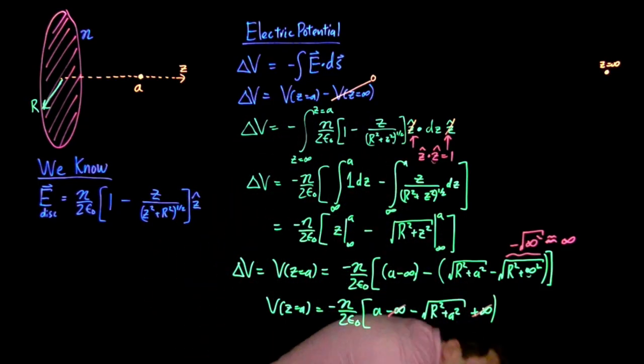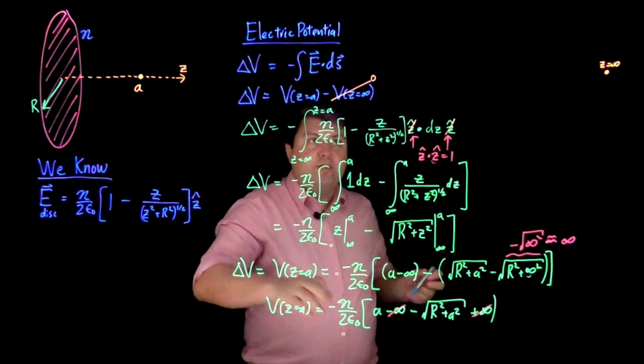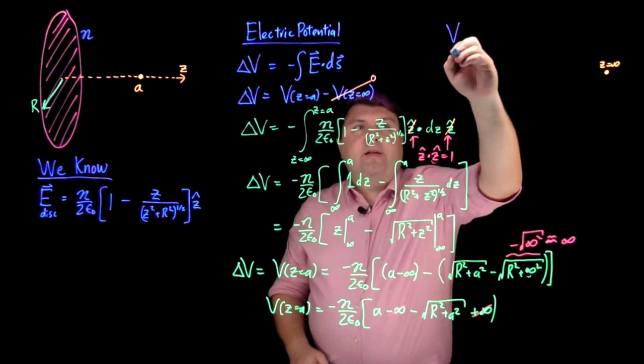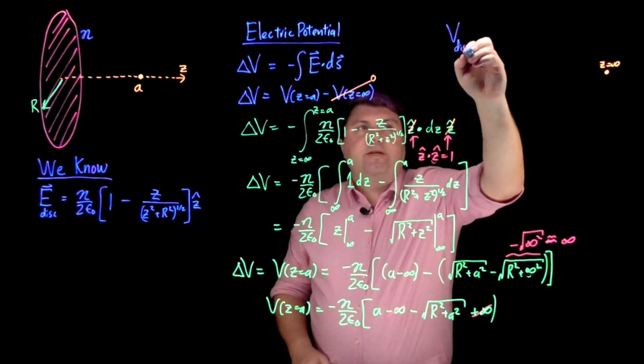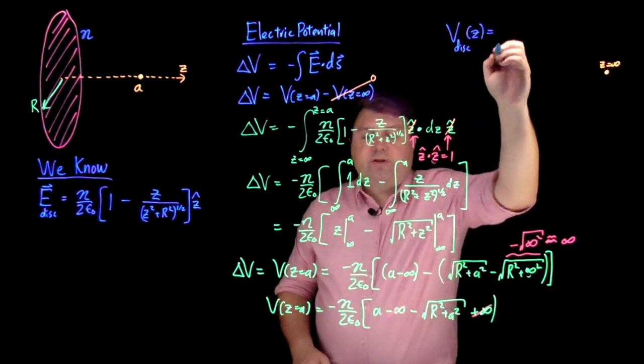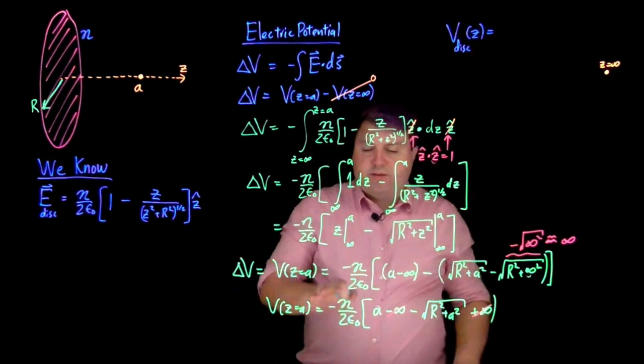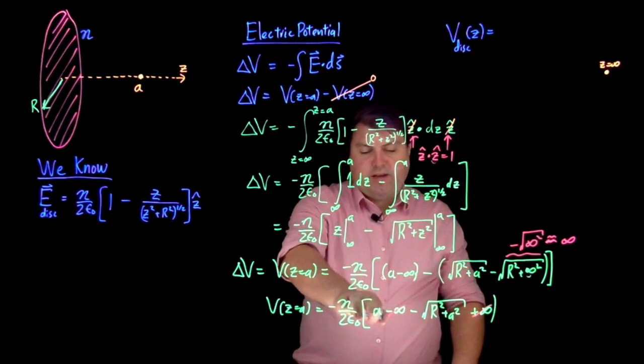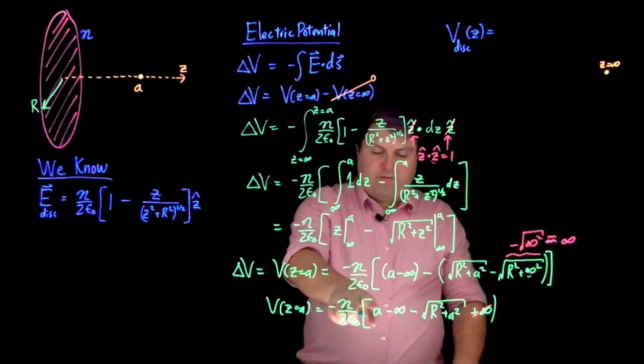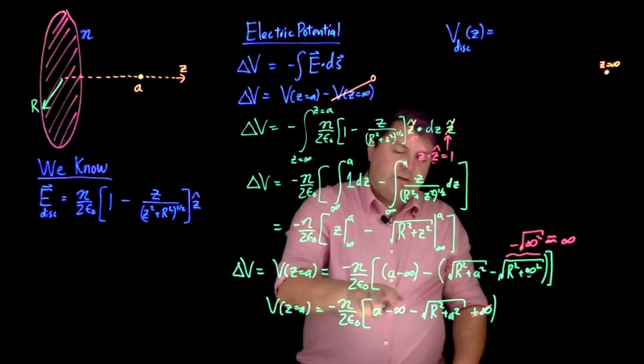If I want this to then be a function of just z, I can say my electric potential of my disk as a function of z is all of this, just every time I see a I replace it with z.